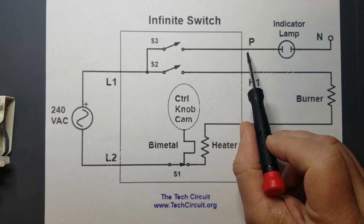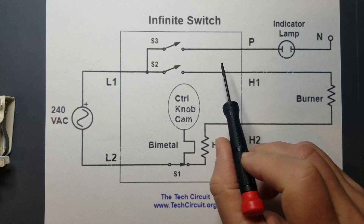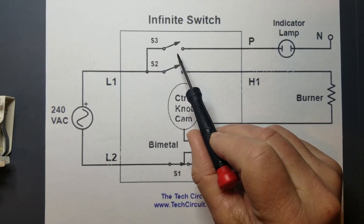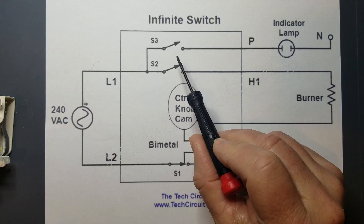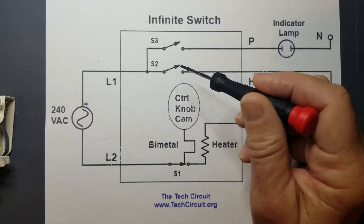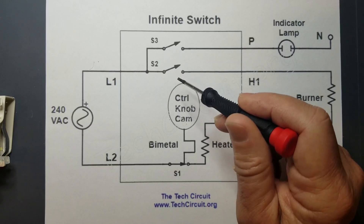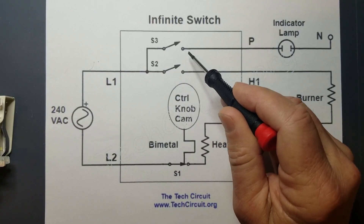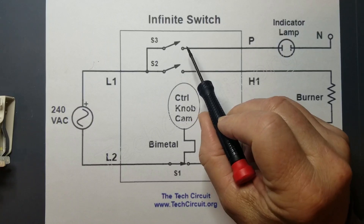This P terminal becomes live when you turn the switch on, which illuminates the burner on indicator lamp. The contacts for this function tend to get a coating of soot over time, which conducts electricity. This will falsely illuminate the burner on lamp, making the user think that the burner is on when it isn't. This is a common failure mode of infinite switches.